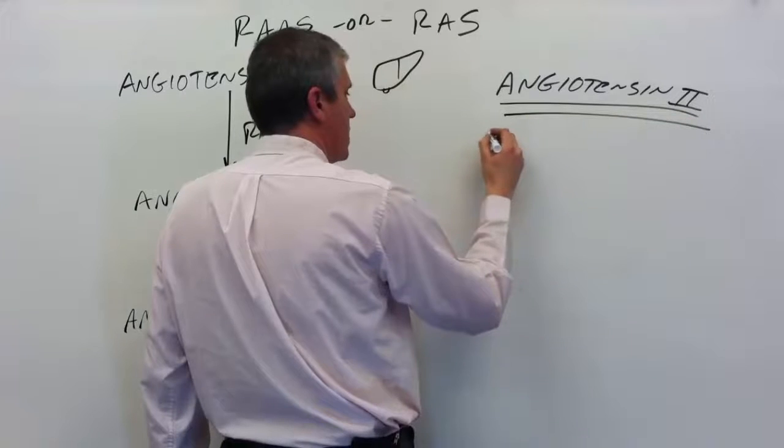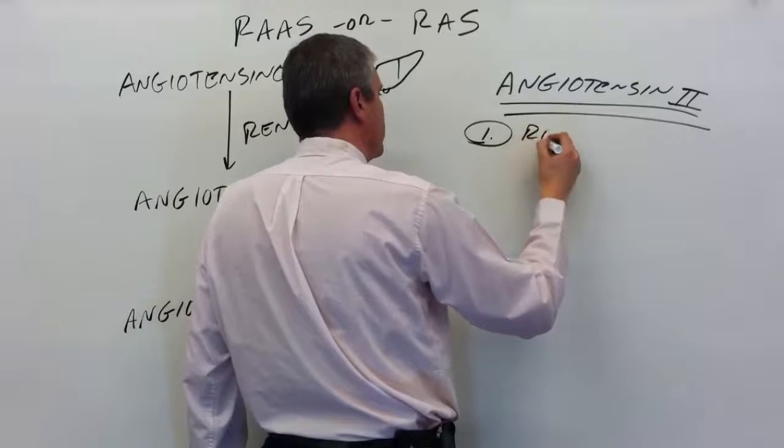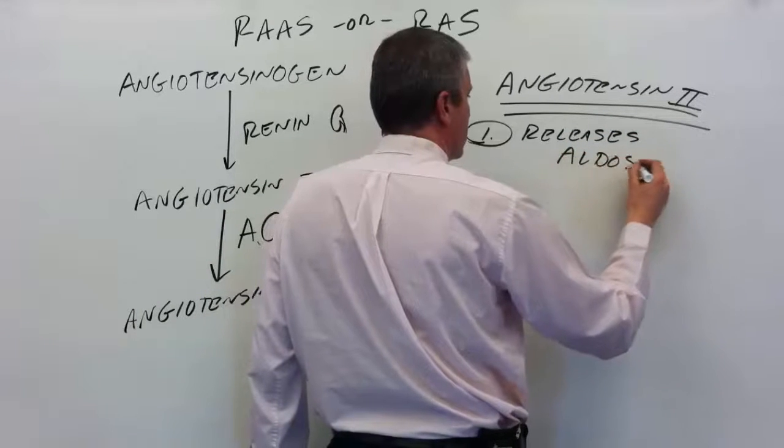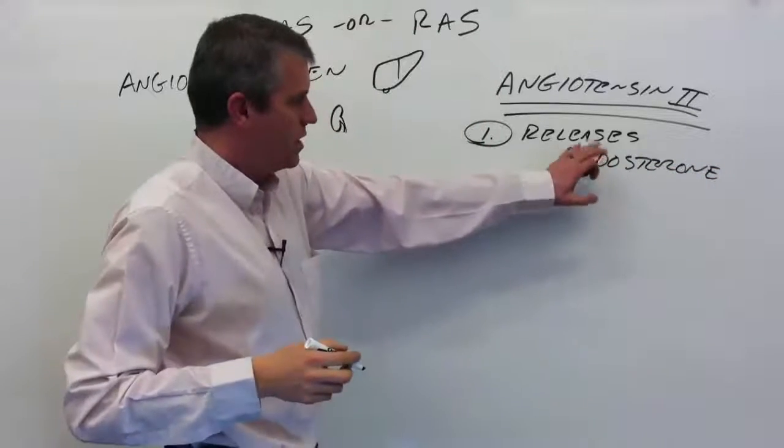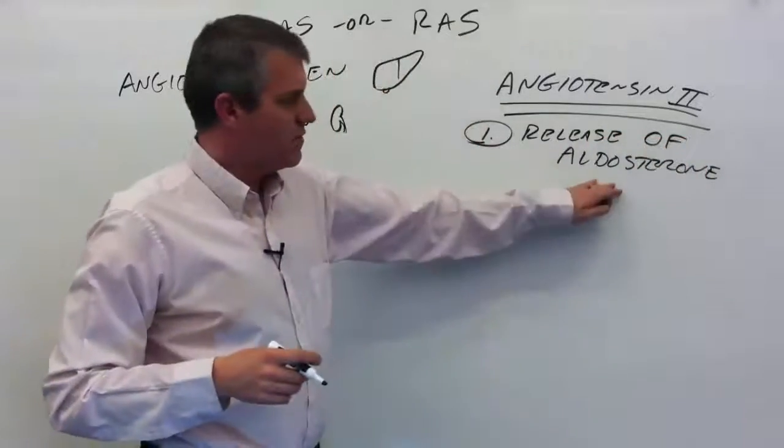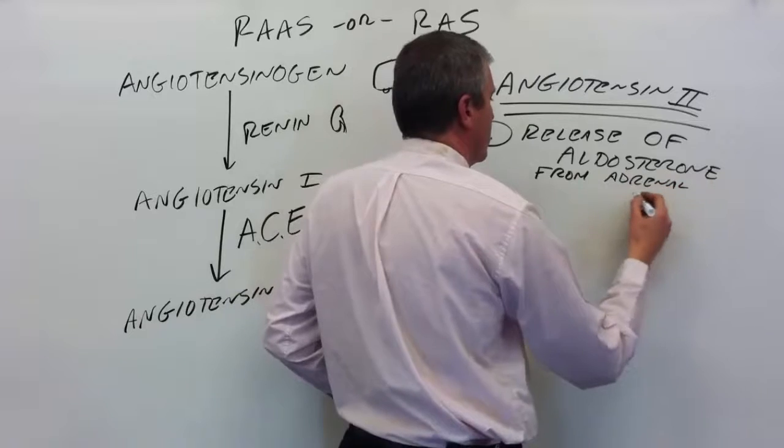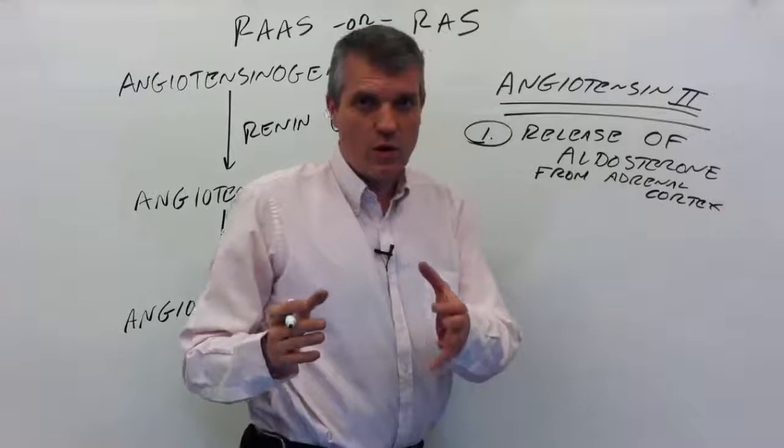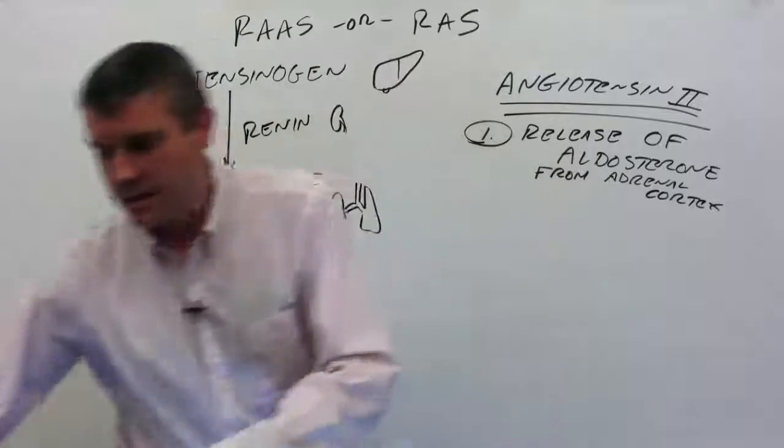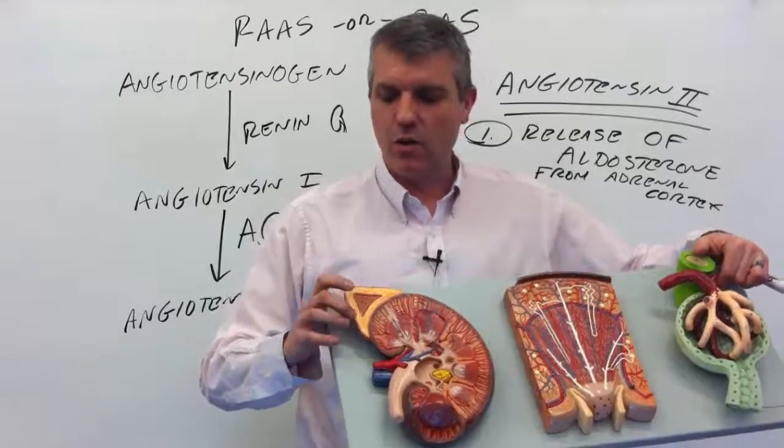Angiotensin II does a few things. The first thing is stimulating the release of aldosterone, specifically from the adrenal cortex. The adrenal cortex is part of the adrenal glands, and the adrenal glands are these little endocrine glands above the kidneys. On my model, this gland right here—that's the adrenal gland. There's an adrenal medulla on the inside, adrenal cortex on the outside.